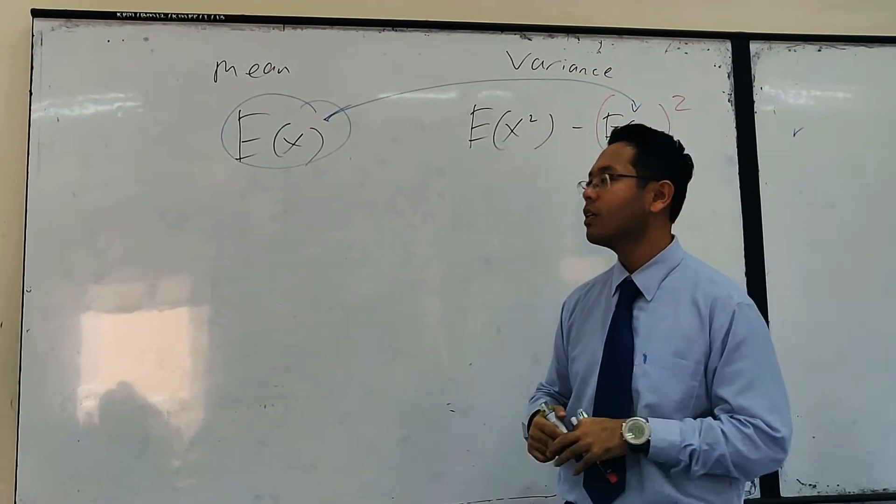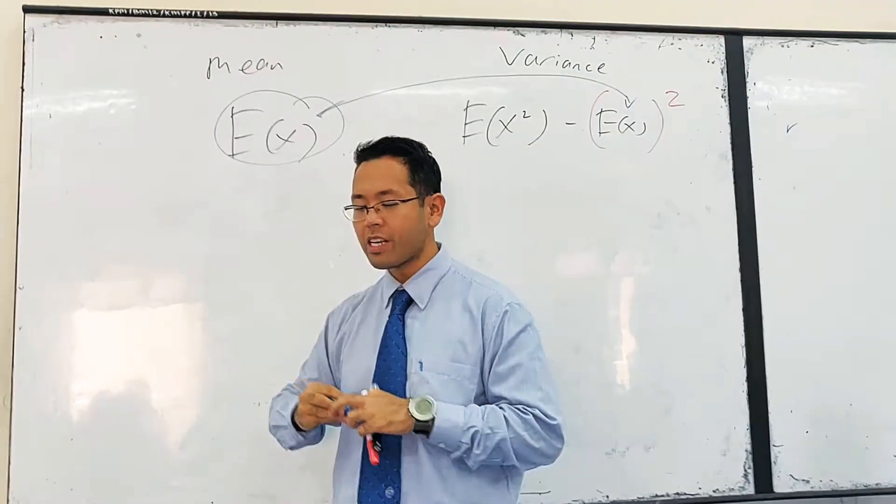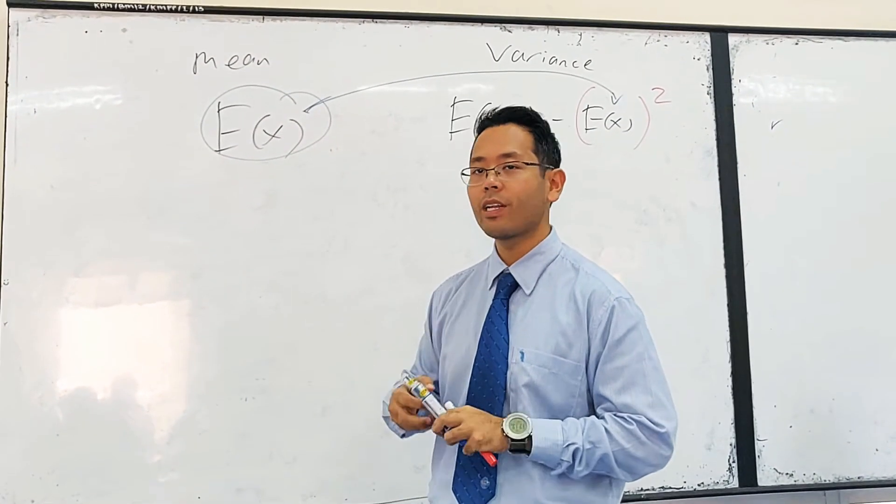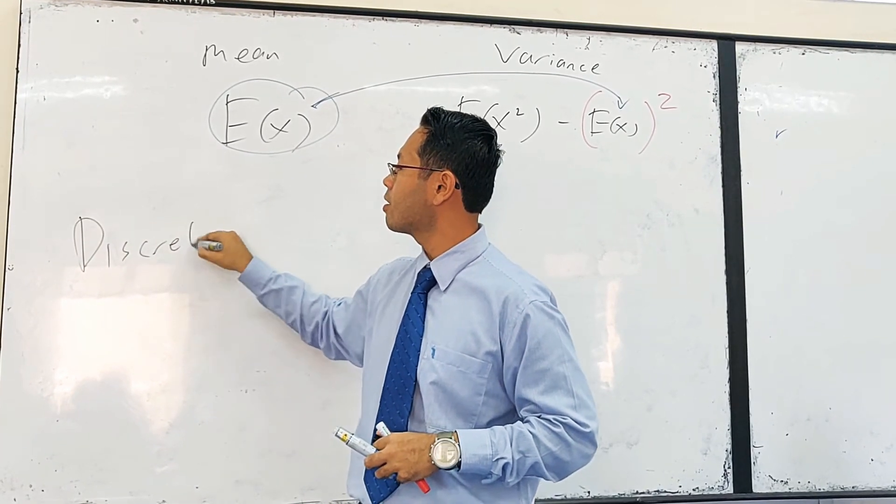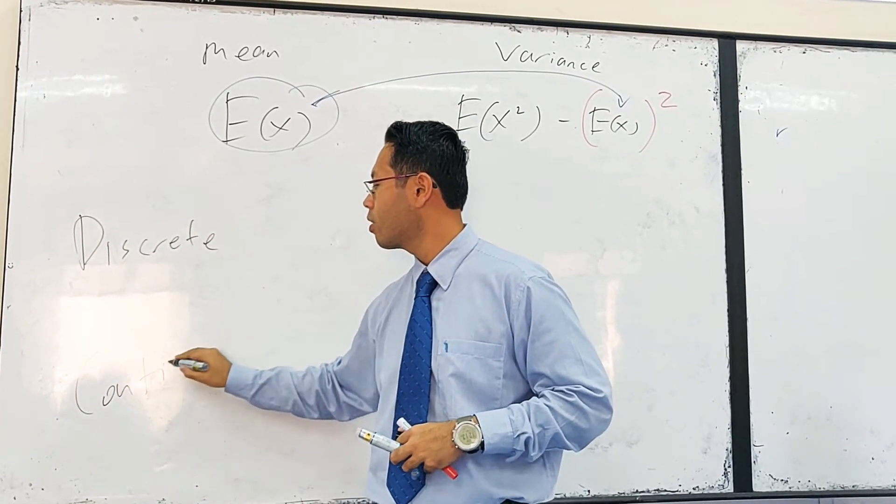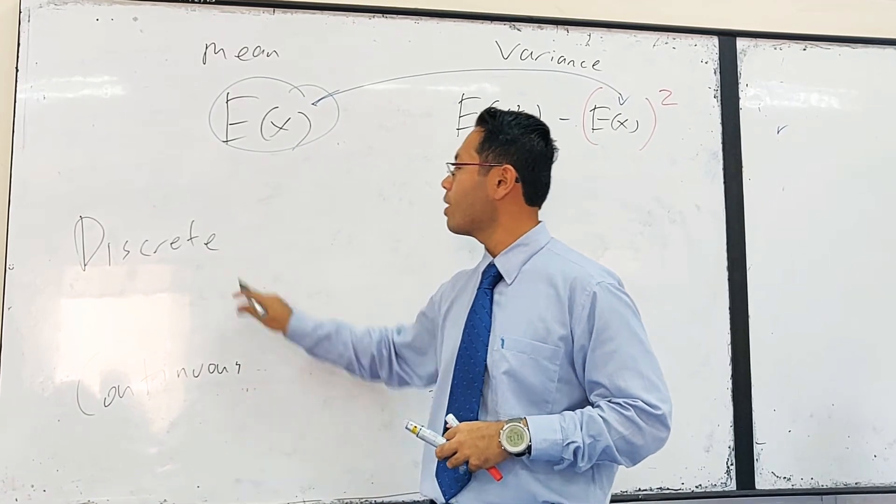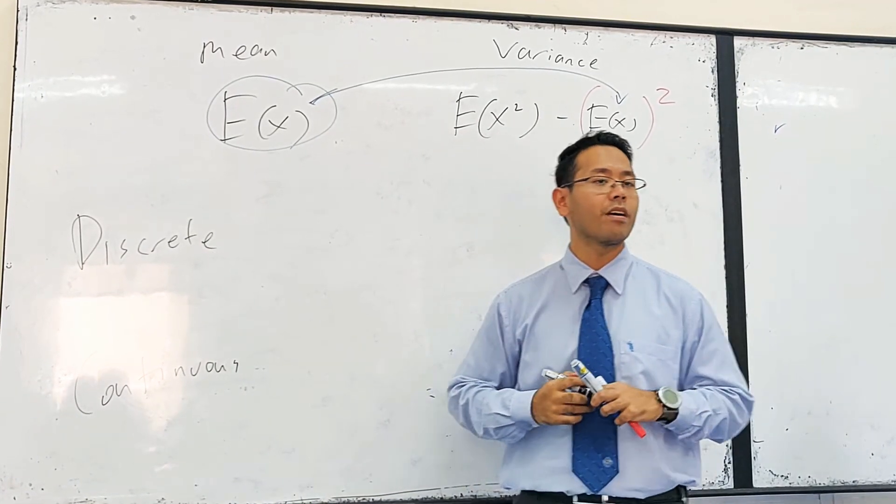Alright, remember for random variables you have two main parts. What are those? Discrete and continuous. Okay, we have discussed discrete last time. How do you find the mean?